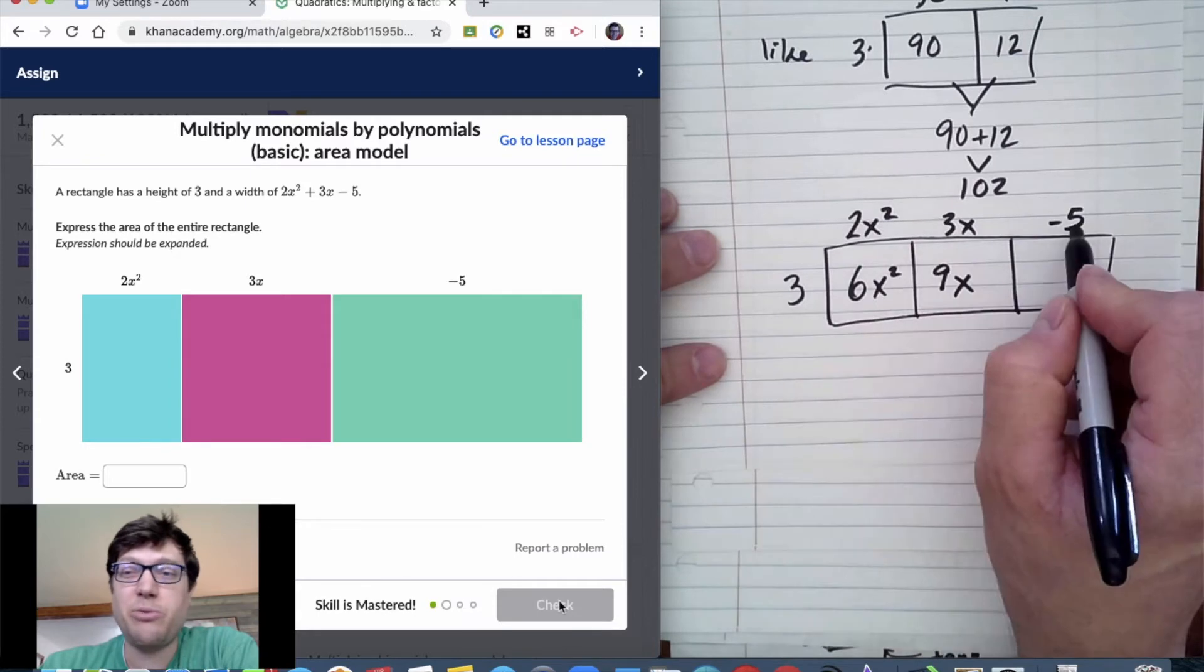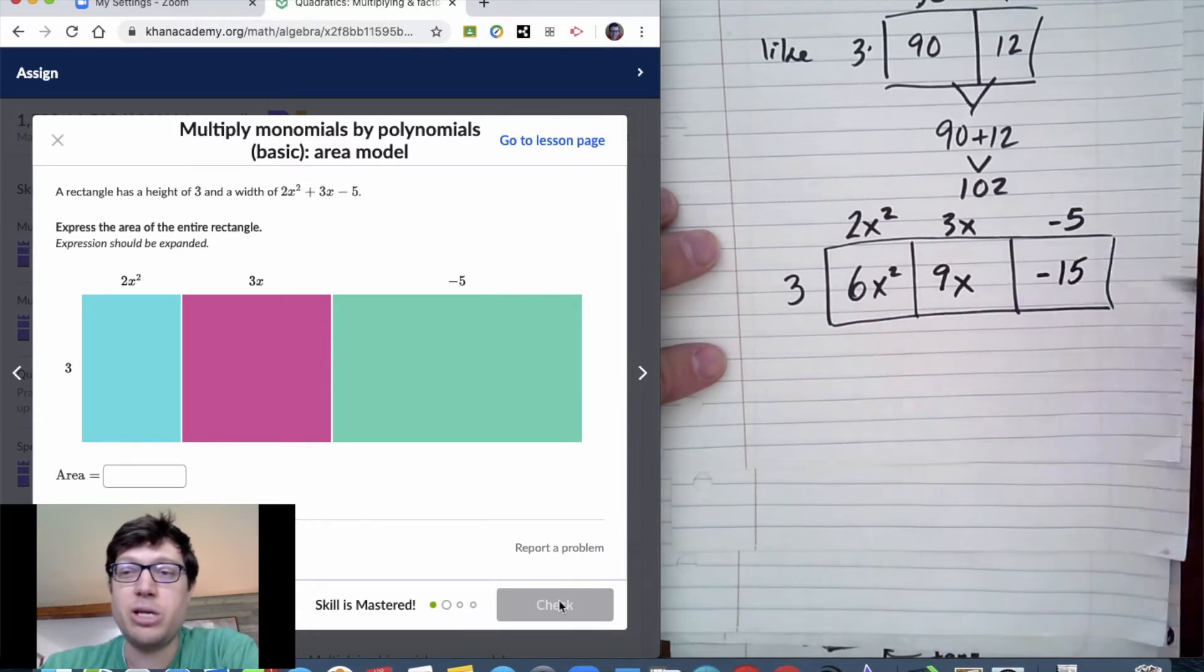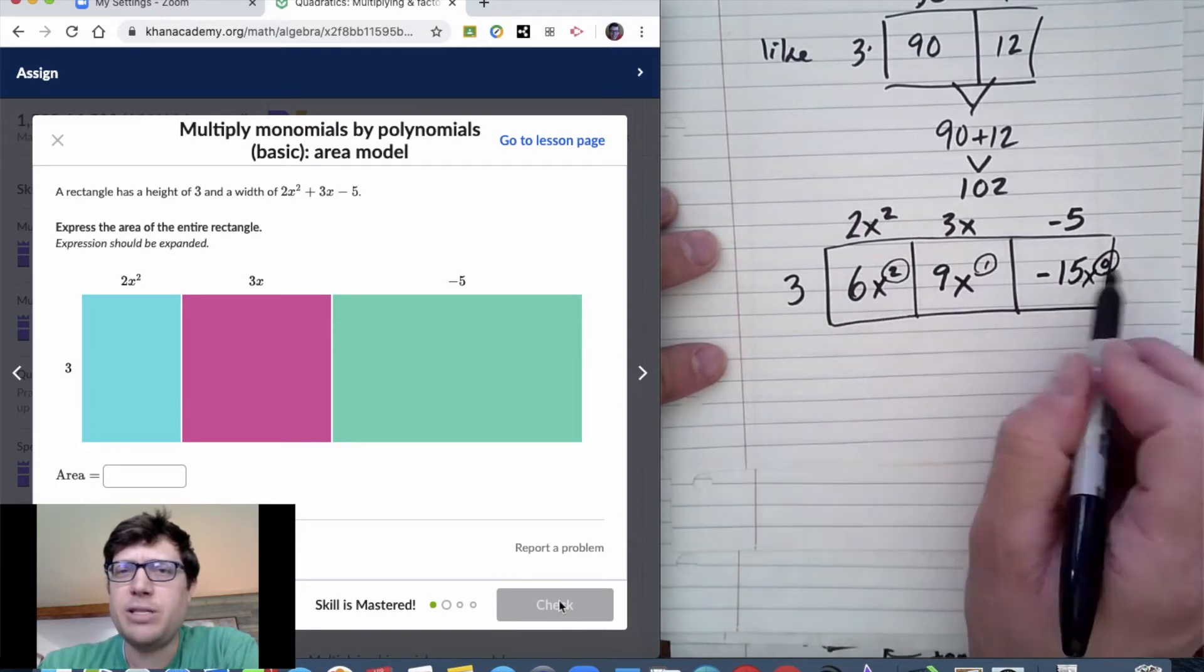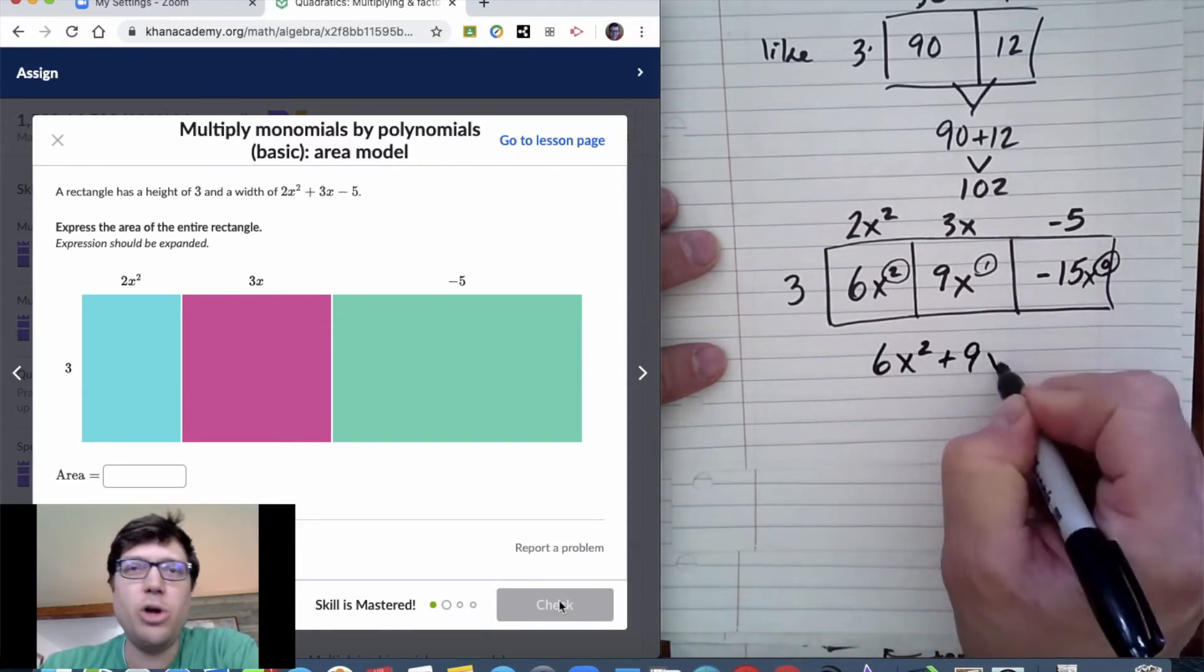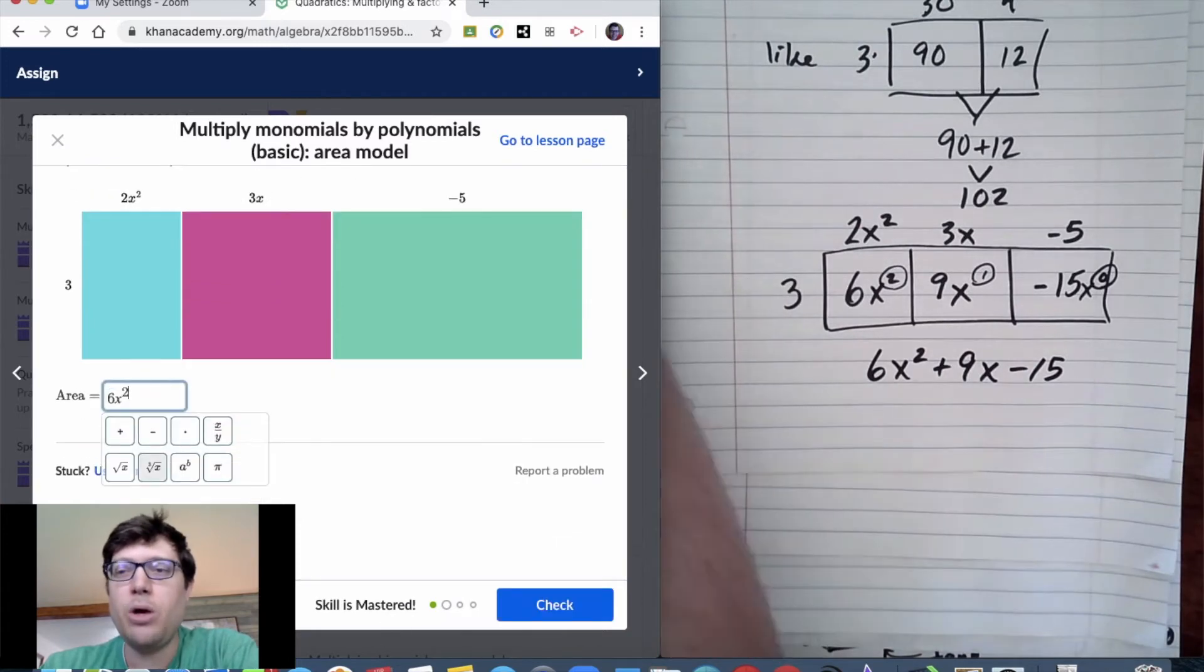And you just multiply 3 times 2, 3 times 3, 3 times negative 5, and you continue to keep the exponents. The 5 doesn't technically have a variable like x, although it does. x has an exponent of 0. When I'm done, 6x² + 9x - 15.